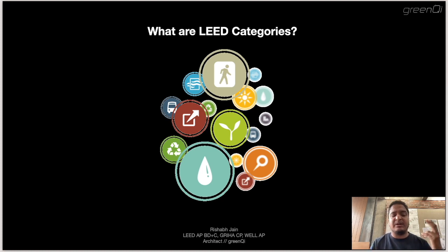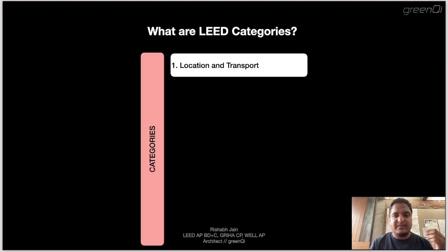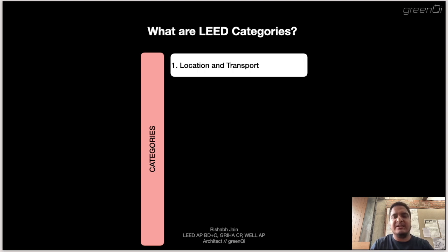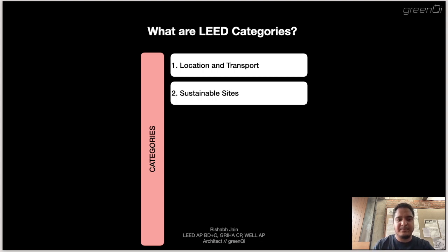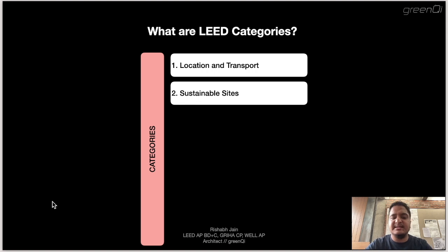Let's discuss what the LEED categories are. First is Location and Transport, recently introduced in LEED Version 4. The LT category focuses on ideas to reduce the cost, pollution, and depletion of resources related to daily transportation of people to and from the building. For example, if a building is in a dense urban setting with good metro and bus connectivity, LEED promotes building on such sites because occupants will have a lower carbon footprint commuting to and from the office.